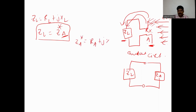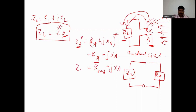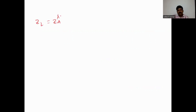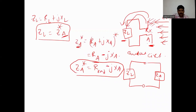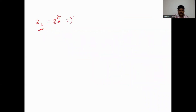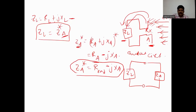The load impedance ZL equals ZA*, which is RA minus jXA. So ZL is RL plus jXL. Comparing real and imaginary terms: RL equals RA, and XL plus XA equals zero. So these are the conditions for maximum power transfer from the antenna to the load.